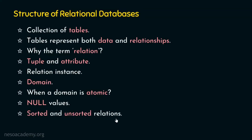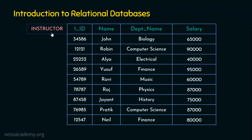Are relations generally sorted or unsorted? Relations are generally unsorted. Let's take an example: the instructor relation, which contains four attributes — instructor ID, instructor name, department name and salary. For example, instructor ID 34586 pertains to John, who works in the biology department and draws a salary of 65,000. A tuple in a relation represents the relationship among a set of values.